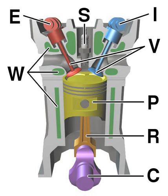Diesel engines take in air only, and shortly before peak compression, spray a small quantity of diesel fuel into the cylinder via a fuel injector that allows the fuel to instantly ignite.